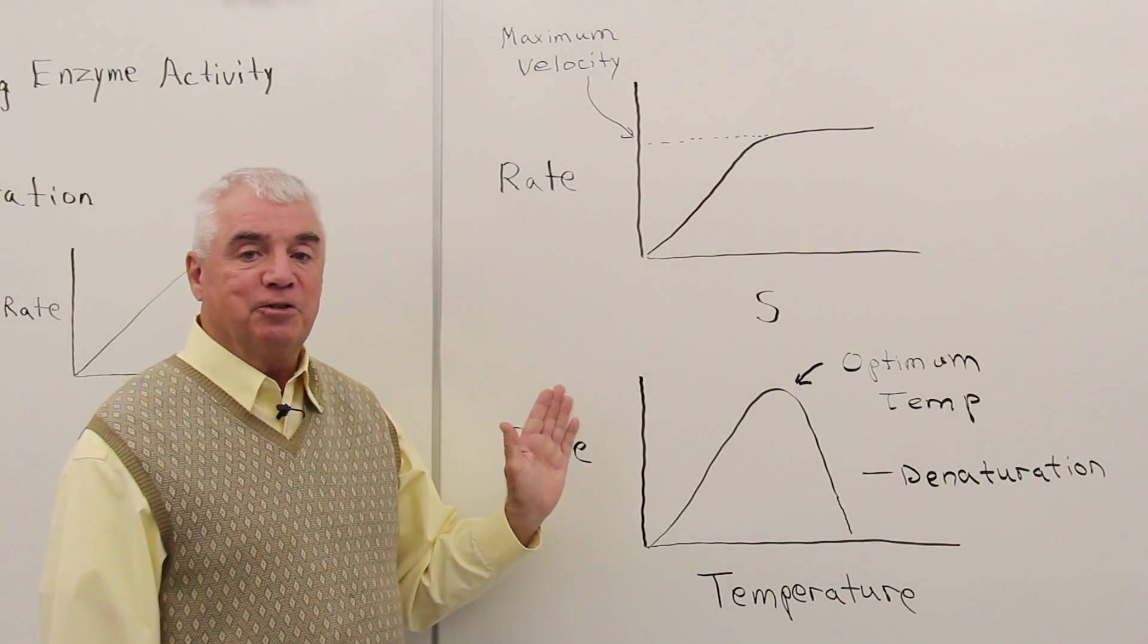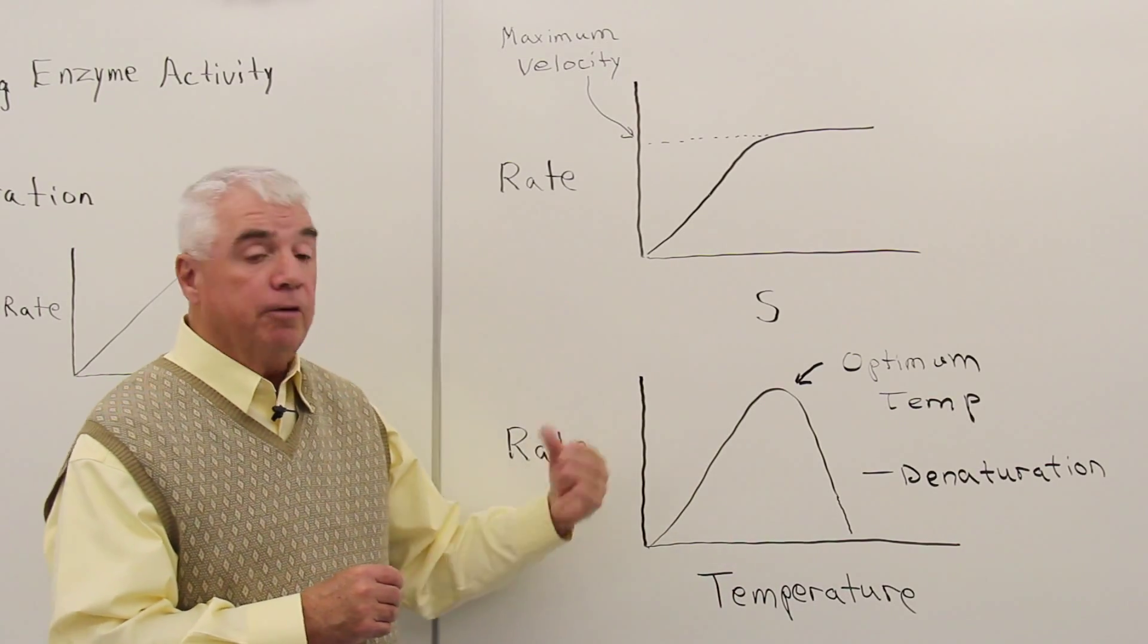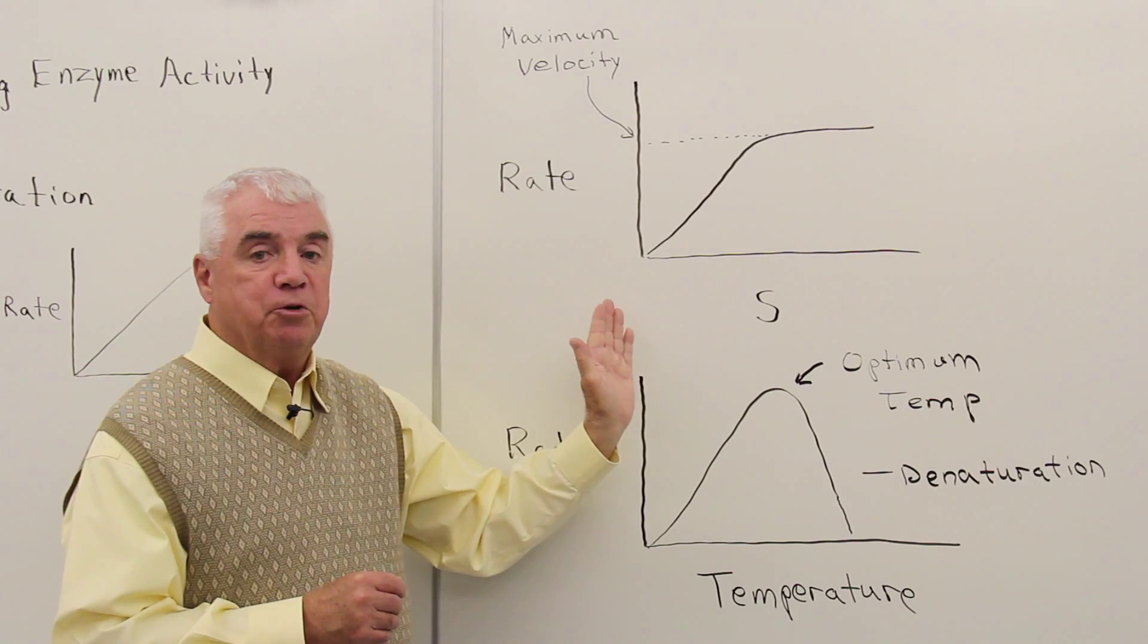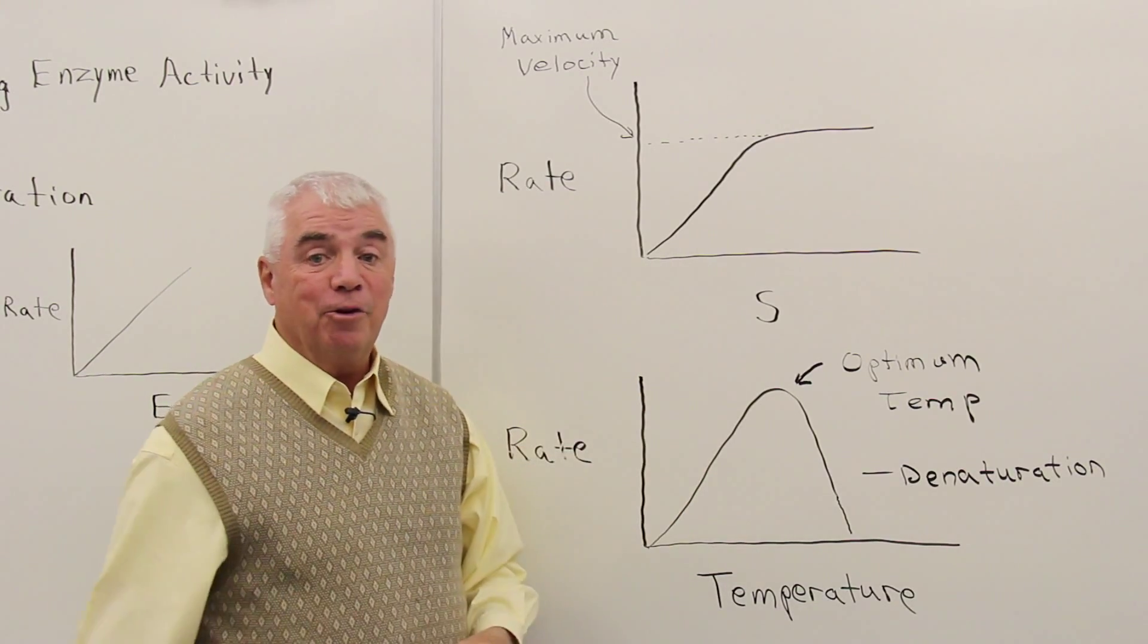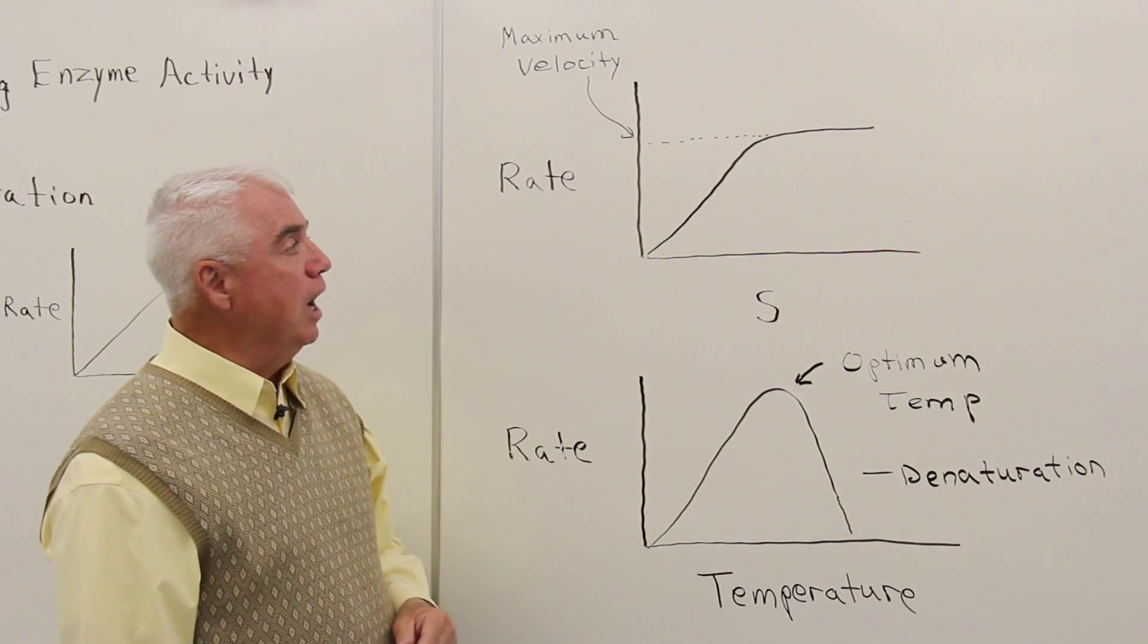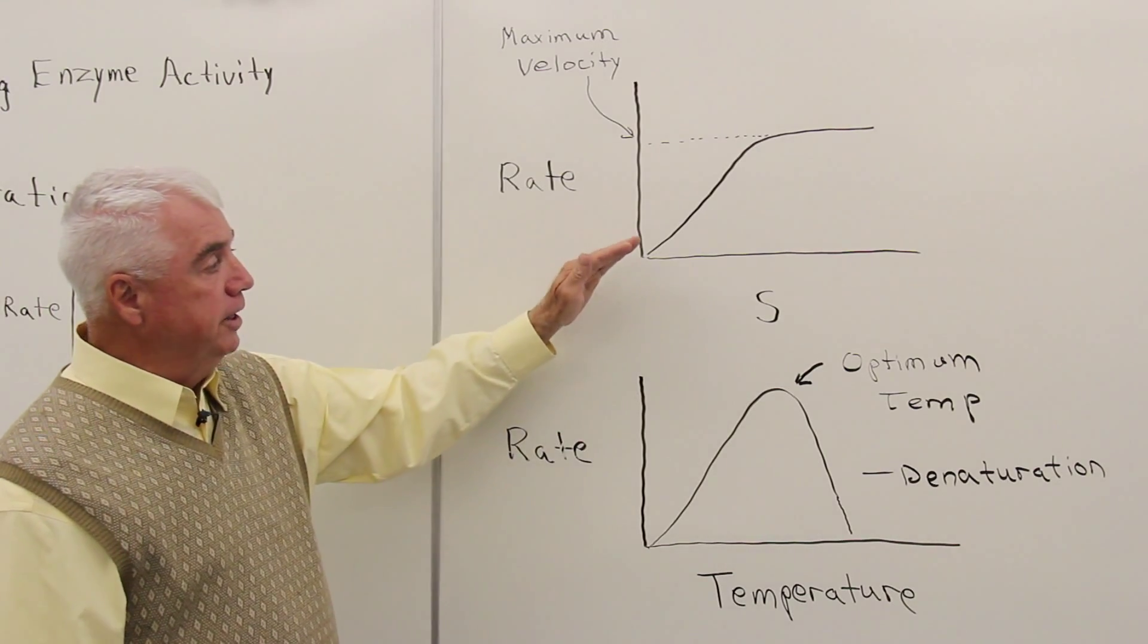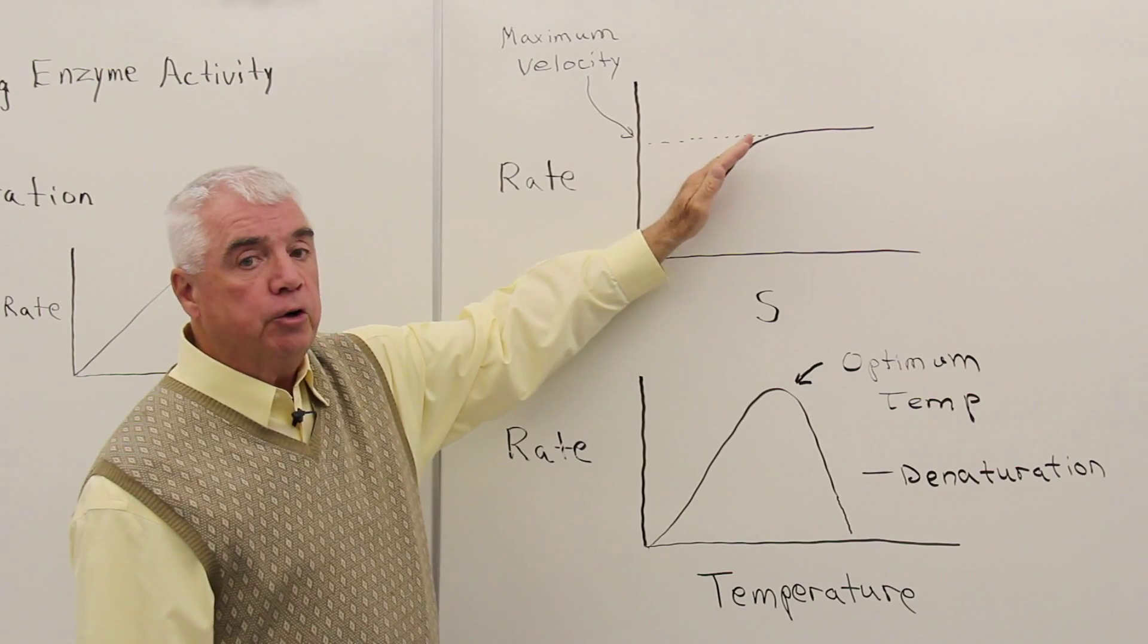And we'd actually conduct a series of experiments. Maybe we've got a whole series of beakers set up. In the first beaker, we add so much substrate. In the second beaker, we add a little more substrate. In the third beaker, a little more still. And we measure each of those initial velocities. And what we find is that as we add substrate, the reaction goes faster and faster.